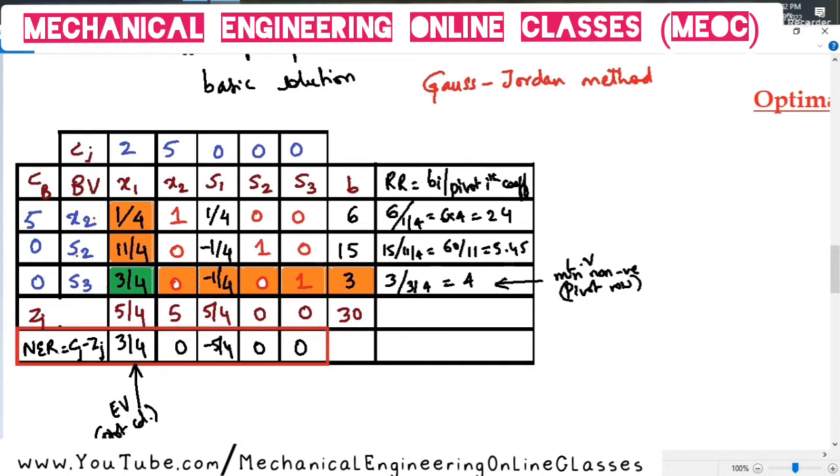So, this condition of not being able to find an entering variable is called the optimality condition. What does that mean? In clear terms, entering variable for a max problem is a non-basic variable having the most positive coefficient in the index row. That is the NER, what you are seeing, the last row in the table. And in case they are all zeros or negatives, then the optimality is attained.